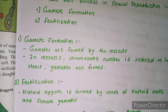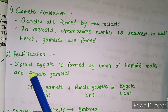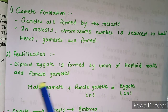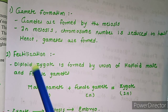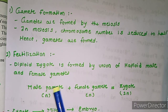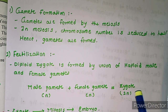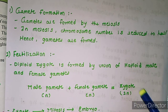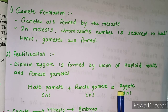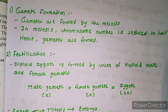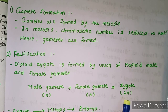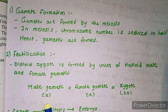Fertilization: a diploid zygote is formed by the union of haploid male and female gametes. Diploid means double and haploid means single. So a single male gamete plus a single female gamete forms a diploid zygote. After union of male and female gametes, a zygote is formed, which develops into an embryo, and that embryo develops into a new individual.